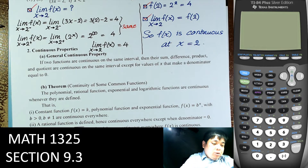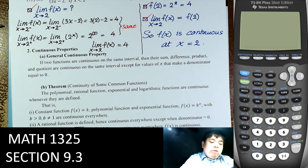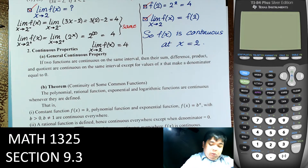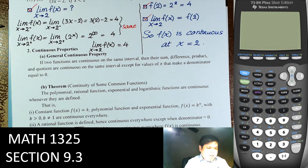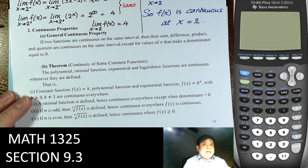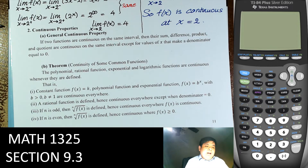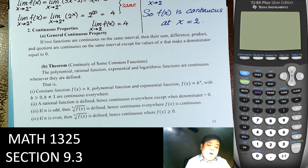Now we have general continuity properties. If two functions are continuous on the same interval, then their sum, difference, product, and quotient are continuous on the same interval — except we cannot divide by zero. More importantly, there is a theorem about continuity of common functions: polynomial, rational, exponential, and logarithmic functions are continuous wherever they are defined.